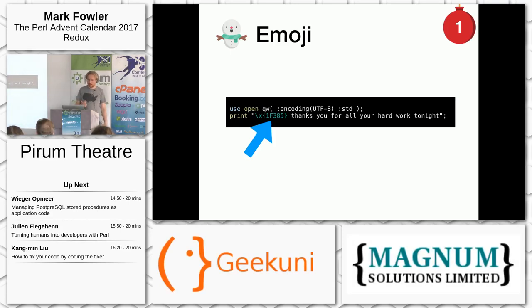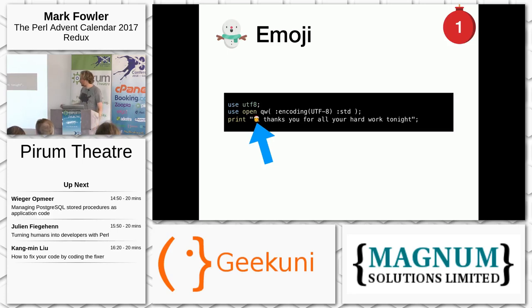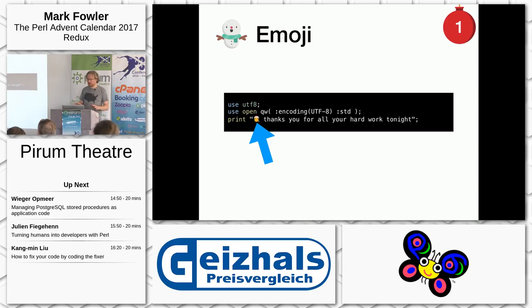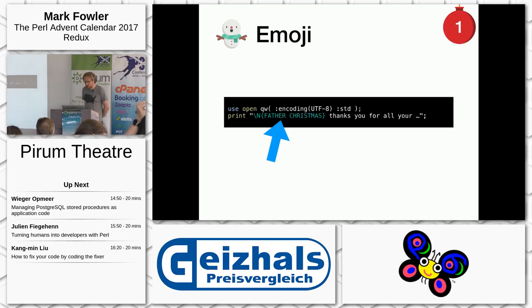So 1F386 — thanks you for all your hard work tonight — Father Christmas thanking his elves. Of course, it's quite easy to make a typo. If I'd have said 1F386 instead, we'd have had the Easter Bunny thanking everybody for their hard work. Not so good. So let's turn UTF-8 mode on in our source code so we can put UTF-8 directly in our source, and then we can just paste in the Father Christmas emoji. Or, using the \N{} syntax which you can use in modern Perls, or slightly older Perls if you enable the right features, you can say \N{FATHER CHRISTMAS}. I kept talking about emojis for more than one day because they're so awesome.